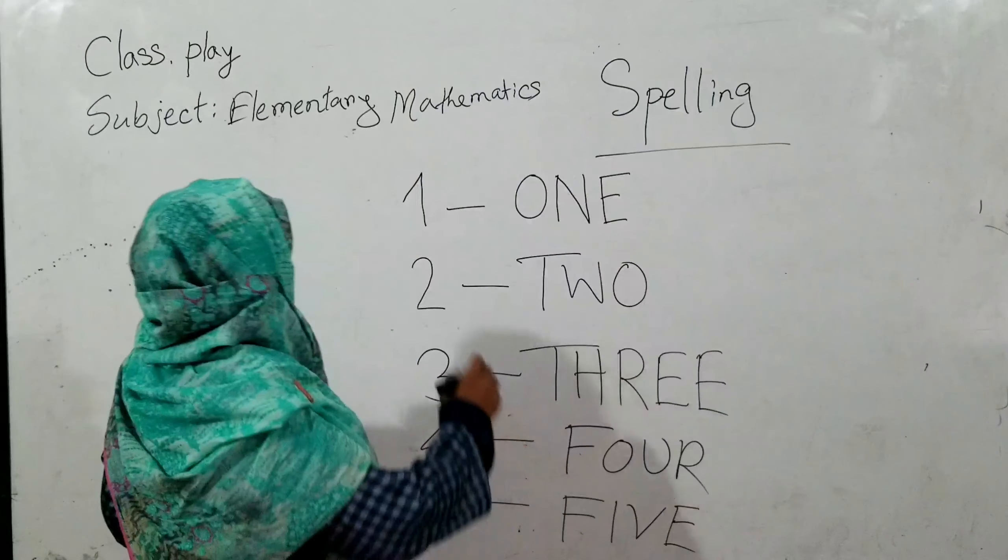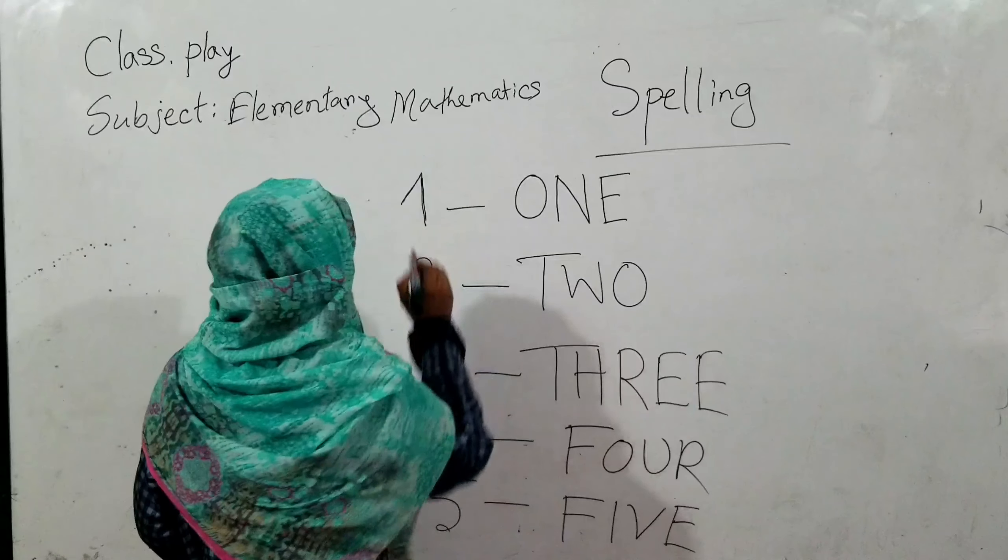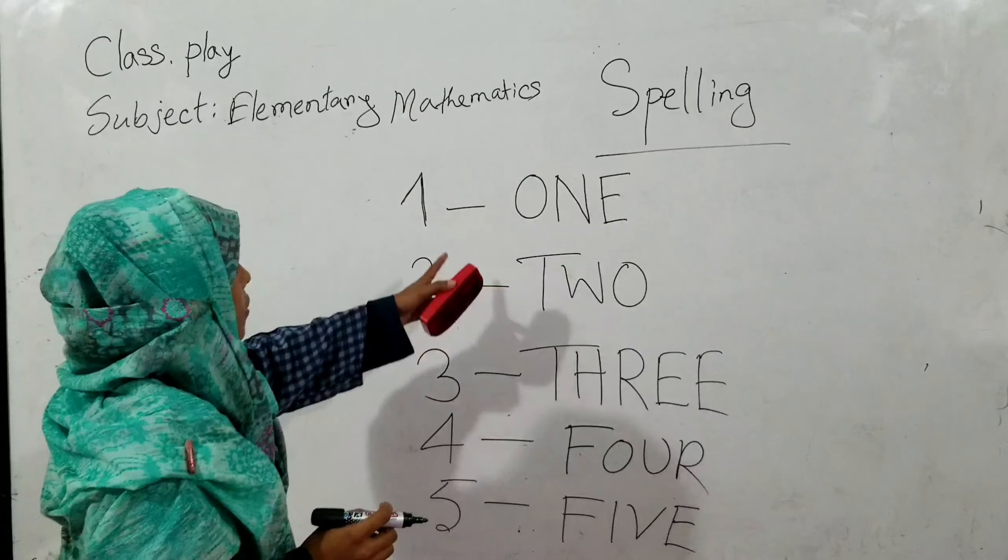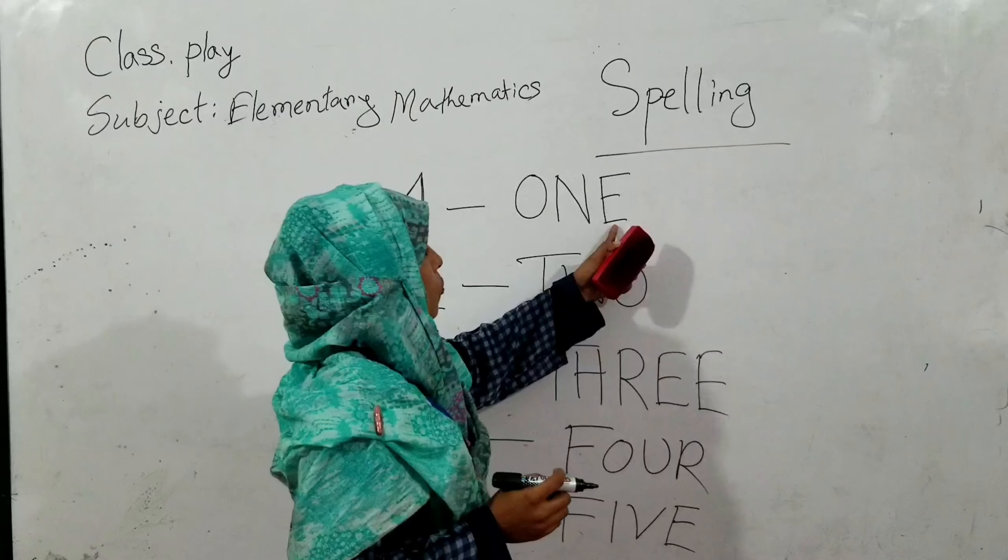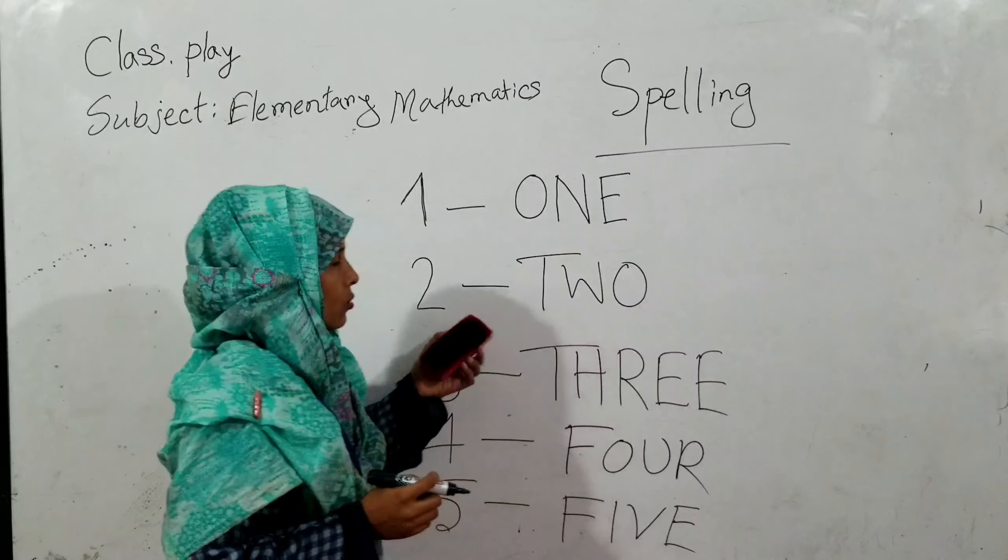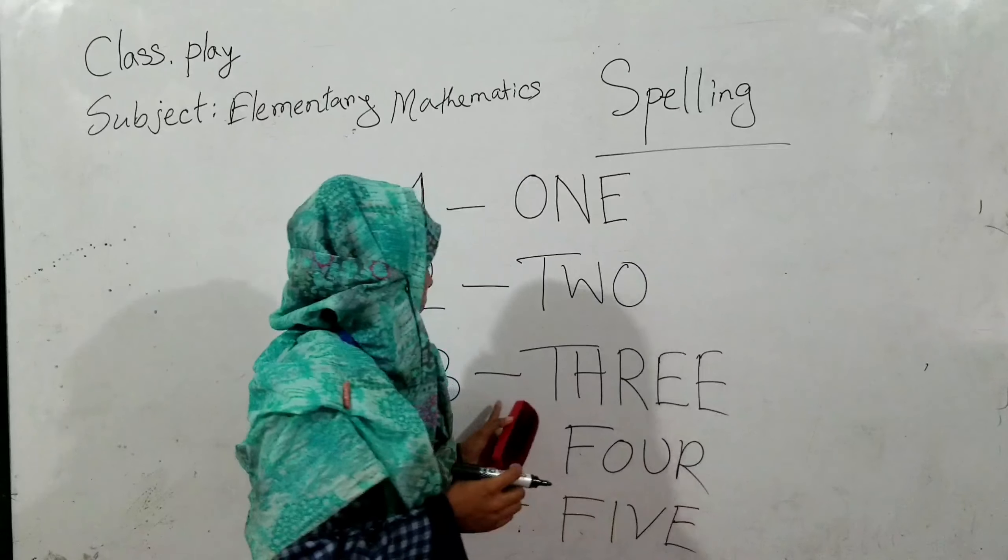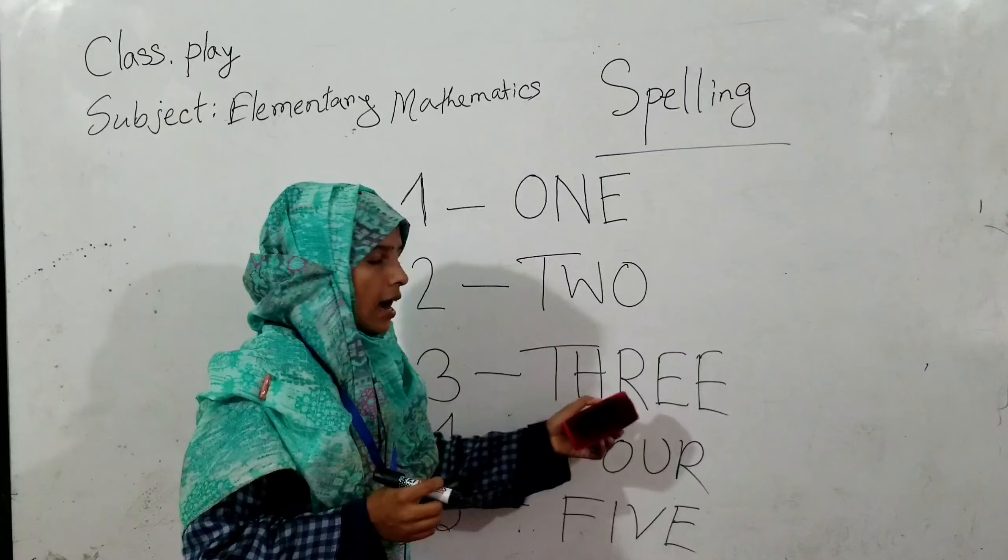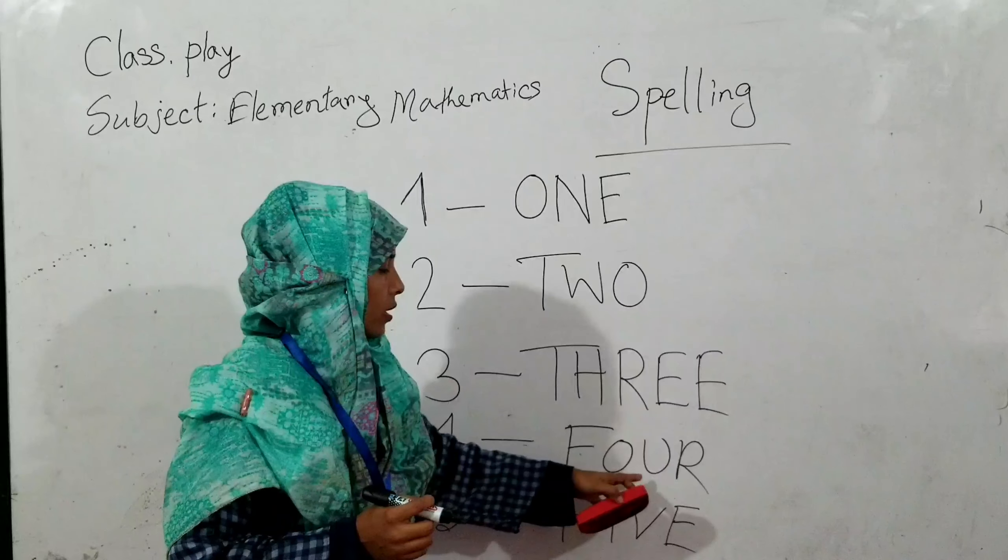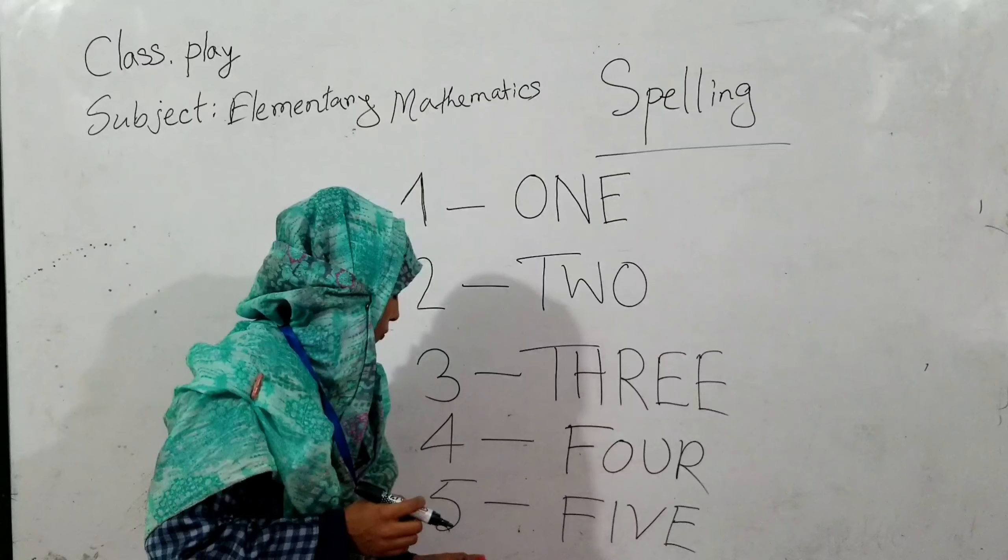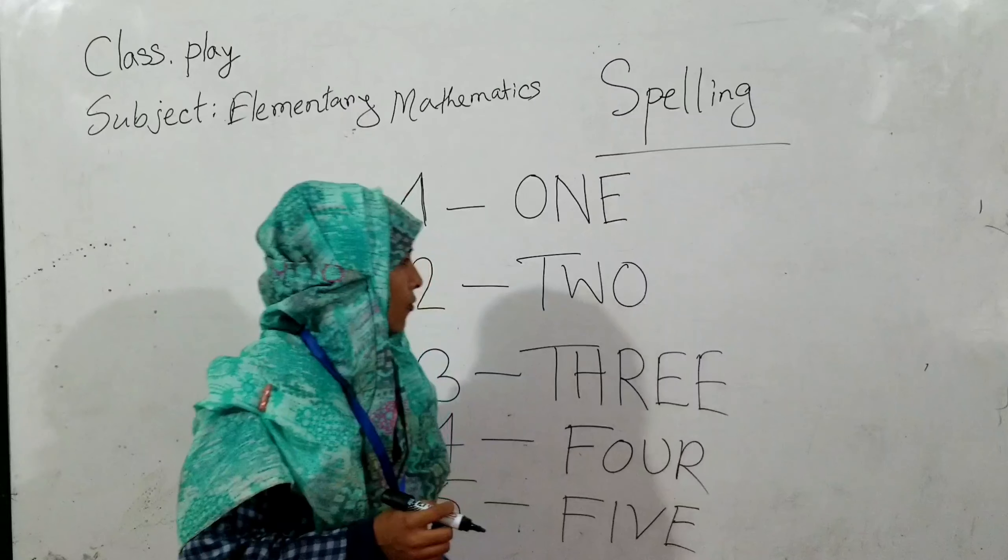Say one. O-N-E. One. Two. T-W-O. Two. Three. T-H-R-E-E. Three. Four. F-O-U-R. Four. Five. F-I-V-E. Five.